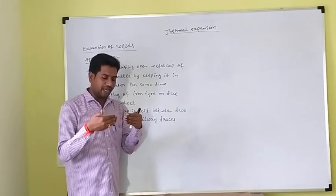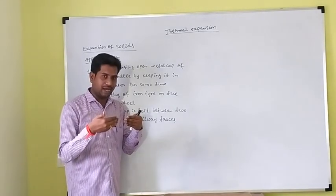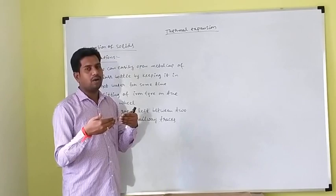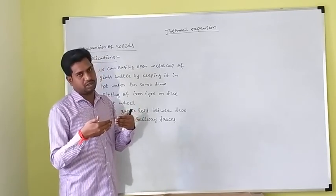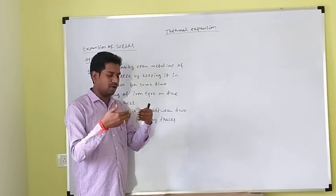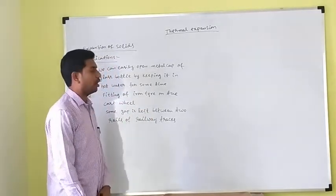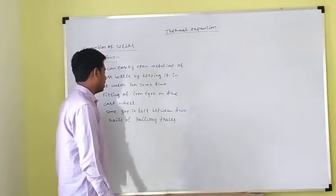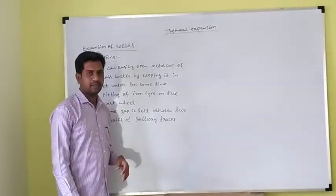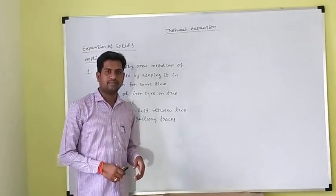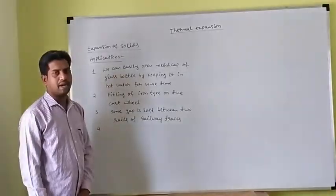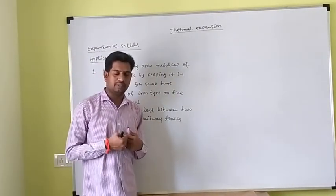When the gap is left and the two rods expand slightly, no force is applied on either rod — this rod does not apply force on that rod — so they can freely expand. To avoid bending of rods in summer, some gap is left between the two rails of the railway track to allow linear expansion in summer and winter.